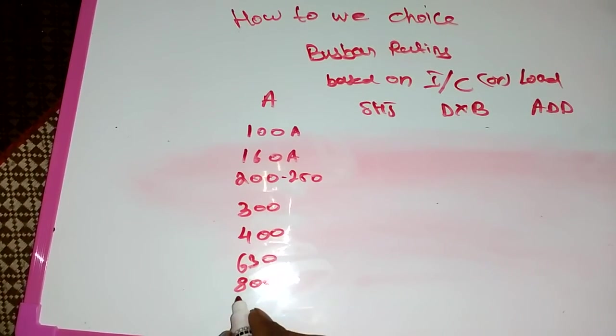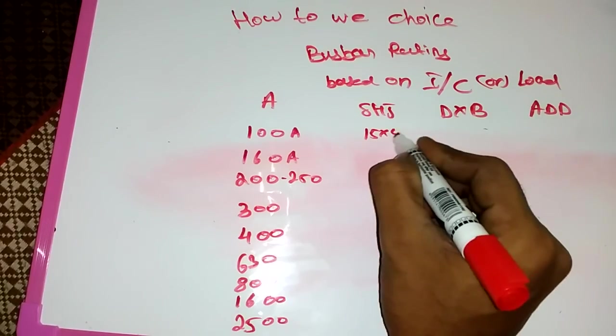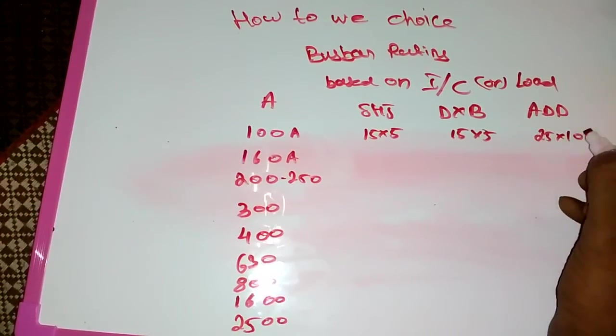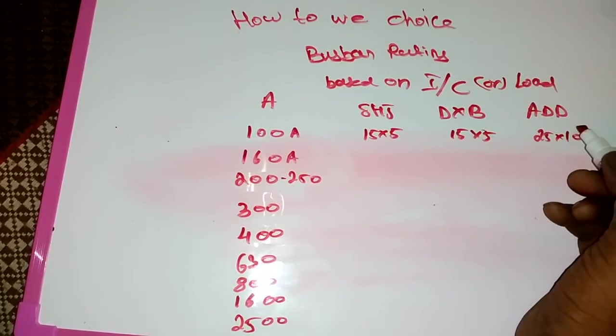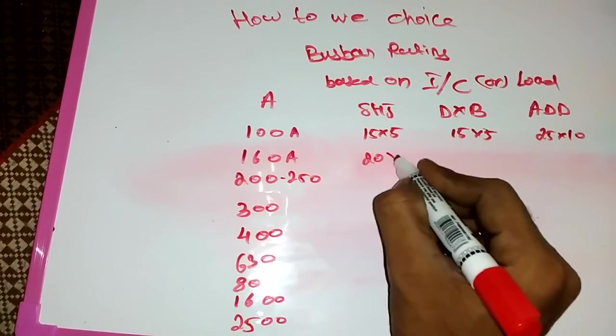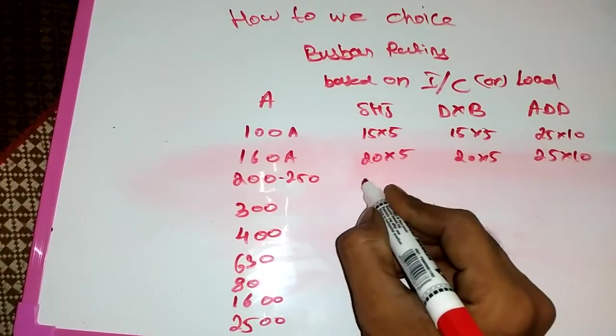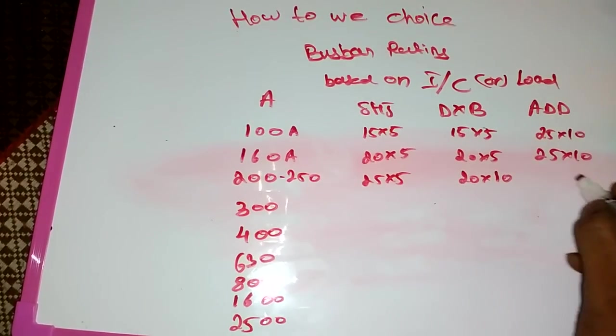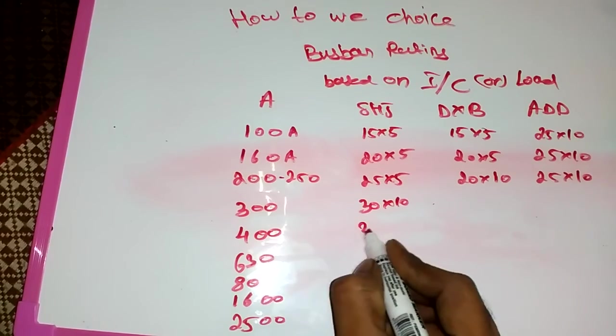400, then 630, 800, 1600, 2500. Now each is for 15 by 5, in here also 15 by 5, and here 25 by 10. Already I said in the top range, we choose for multiplication factor already I said 1.5 and 1.25. Here 20 by 5, here 25 by 5, then here 20 by 10, here 25 by 10, then in 300, 30 by 10, in 400 also we use 30 by 10.